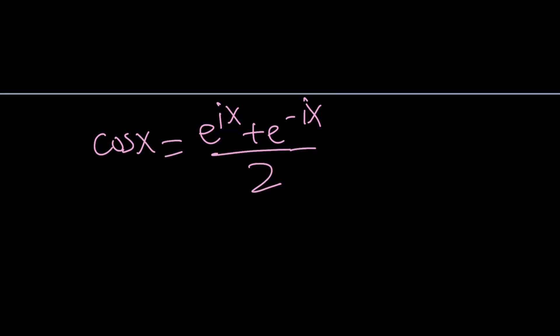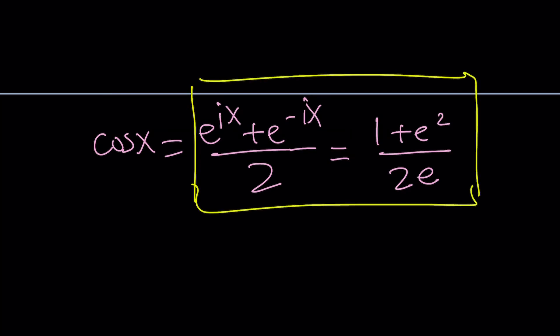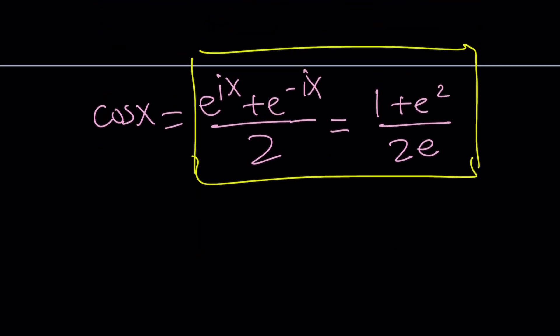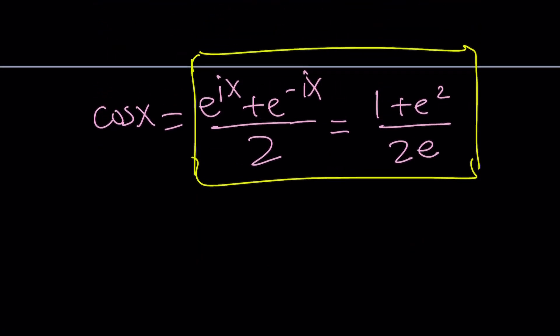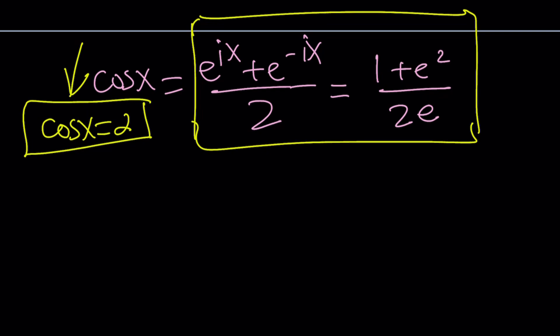So cosine x can be written as E to the ix plus E to the negative ix divided by 2. You can also use hyperbolic cosine for this. Hyperbolic functions come up in these cases. But what I'm going to do is replace cosine x with this numerical value. Now, what I'd like to do is solve this equation. Forget about cosine x and let's solve this equation. What's nice about this equation? Easy to solve and it turns into a quadratic. I think we've done a similar problem before. It's probably cosine x equals 2 when we did it. I'll try to find it and share the link with you here.